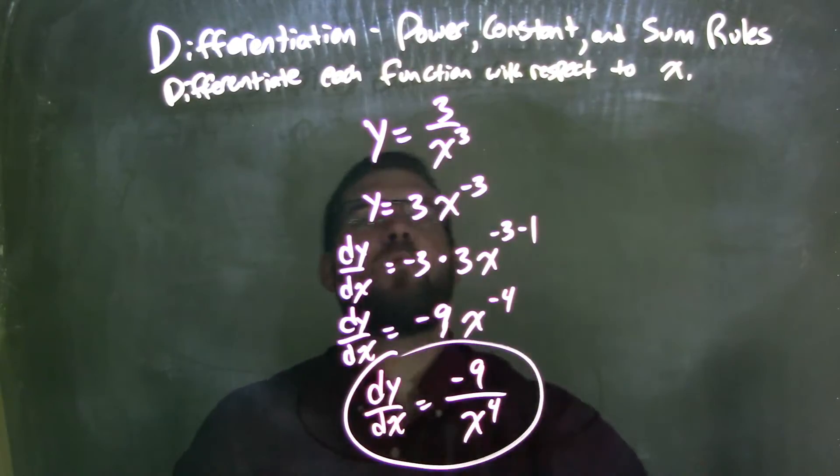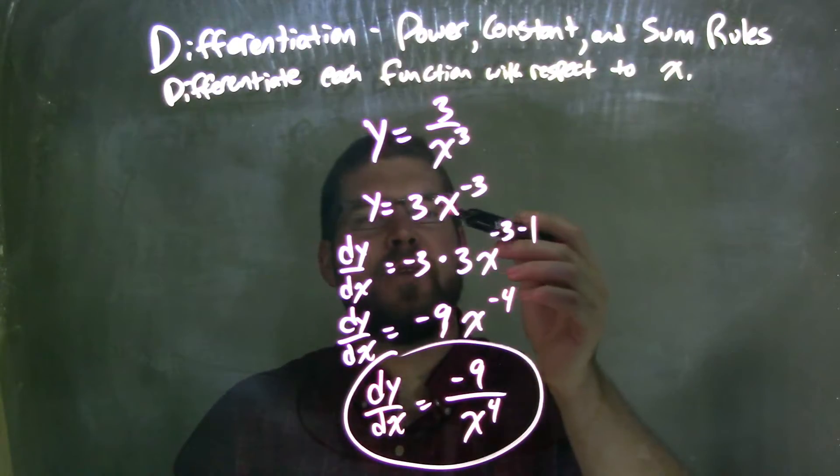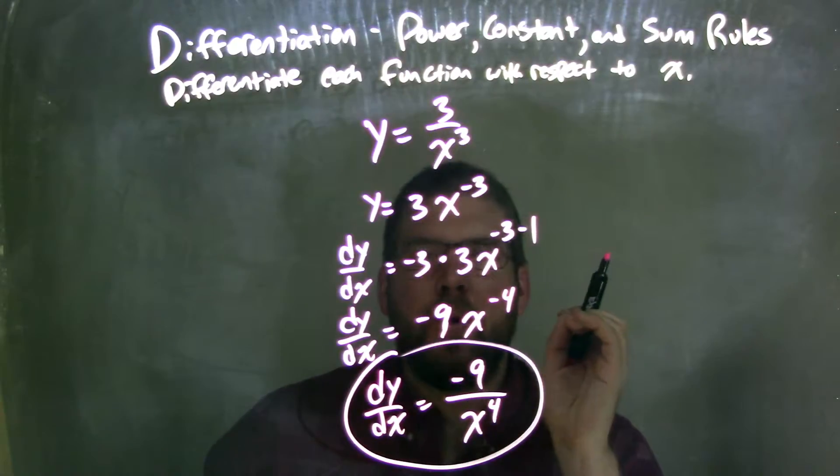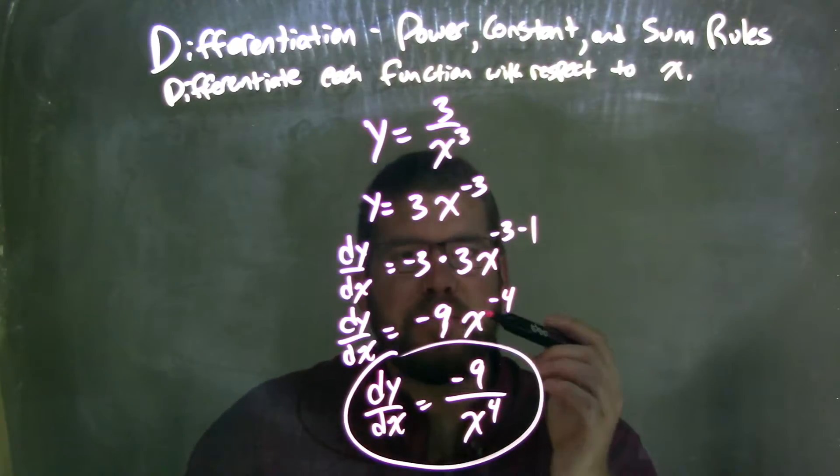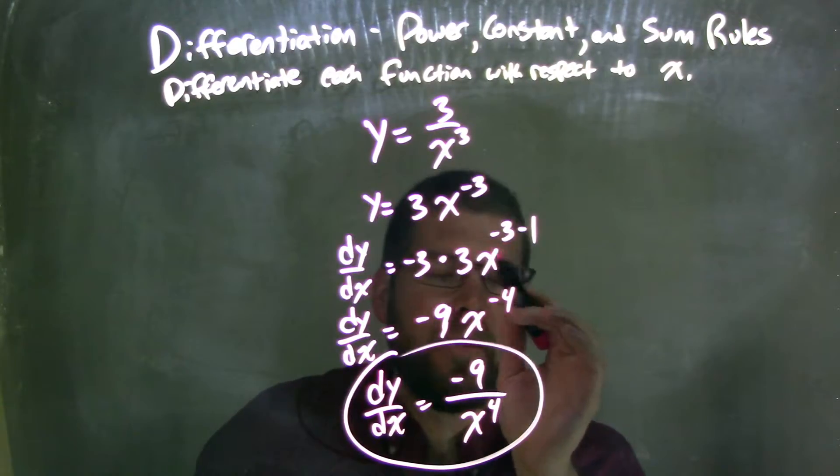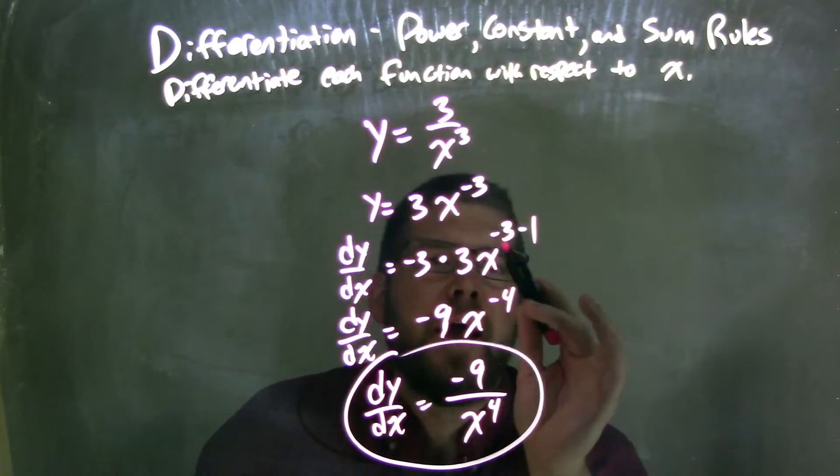So let's recap our steps here. We have y equals 3 over x to the 3rd power. I rewrote that to be 3 times x to the negative 3rd power, and I find it's easier for me to solve or derive using the power rule like that, okay, when it's all on the numerator, or the exponent, or the power specifically. Then I brought the negative 3 out front, using my power rule, and then that exponent I subtracted by 1, okay?